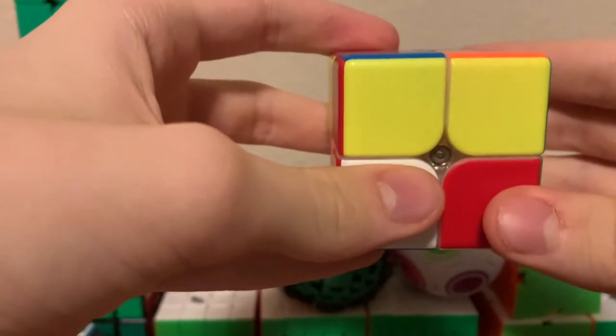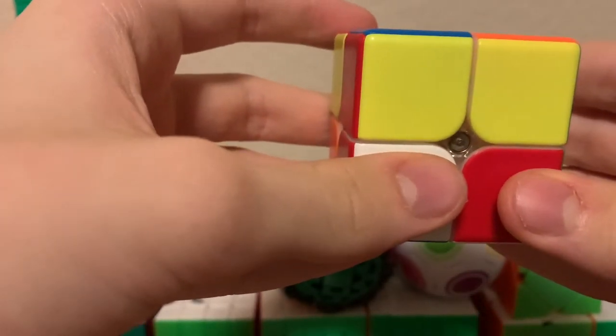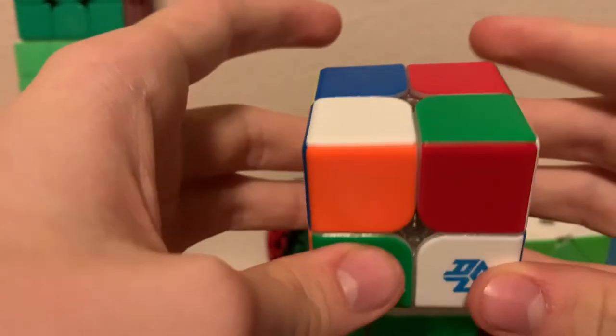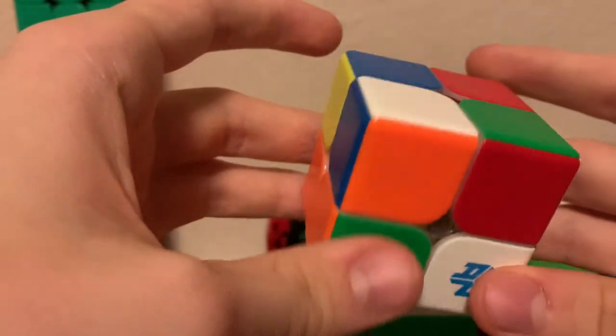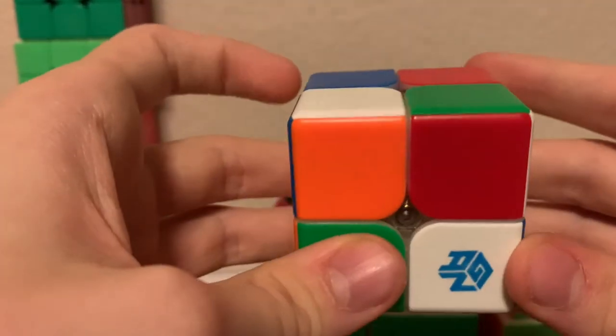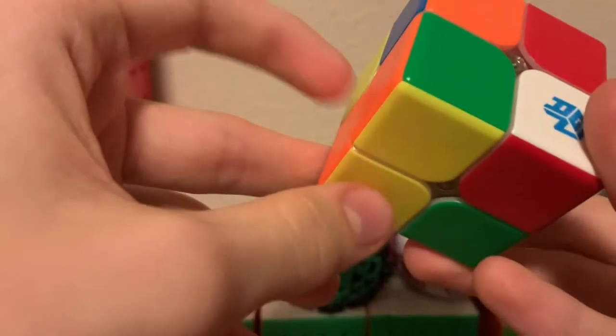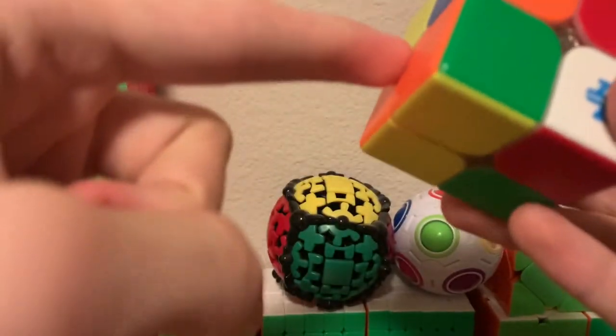The first step is to create a 2x1x1 bar in the bottom left corner. This is done intuitively, like this, and it can be color neutral if you want, but for the purposes of this tutorial, I'm just having a fixed color scheme of yellow on the bottom and orange on the left side.